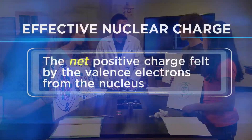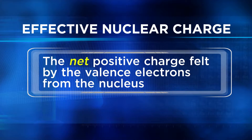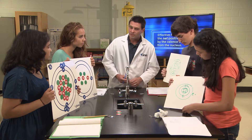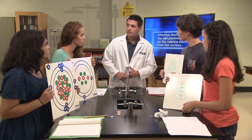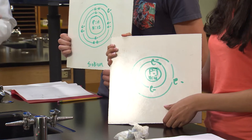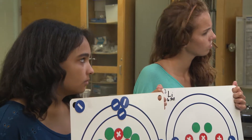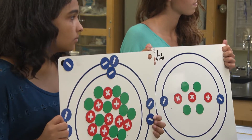Which brings us to the introduction of a new term: effective nuclear charge. It's the net positive charge felt by the valence electrons from the nucleus. A higher effective nuclear charge means that there's going to be a stronger attraction for the electrons to the nucleus. So, as you're looking at your models, which element — lithium or sodium — is going to have a stronger attraction between its valence electrons and the protons? You need to be careful because there's a lot to consider when answering this question.